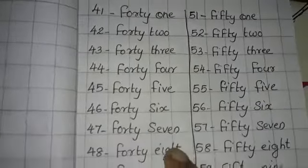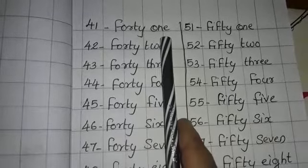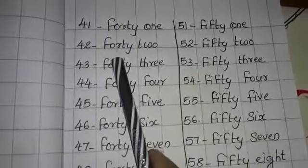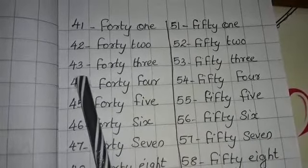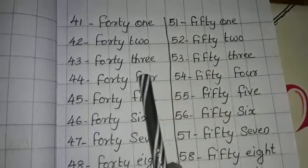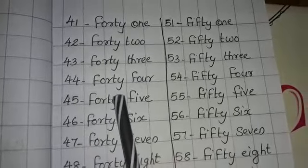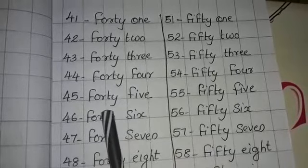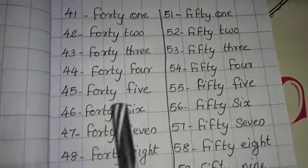Then write the number names. 41: F-O-R-T-Y-O-N-E, 41. 42: F-O-R-T-Y-T-W-O, 42. 43: F-O-R-T-Y-T-H-R-E-E, 43. 44: F-O-R-T-Y-F-O-U-R, 44. 45: F-O-R-T-Y-F-I-V-E, 45.